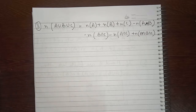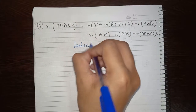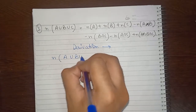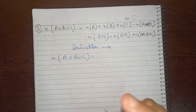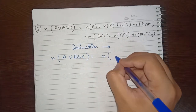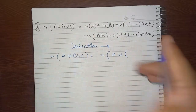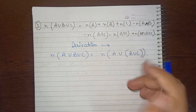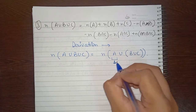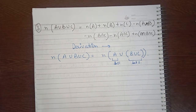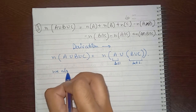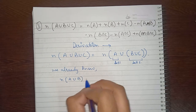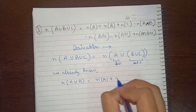This is our first equation, and from the earlier expansion we have our second equation. Combining equation one and equation two, we get what we want: the complete formula for A union B union C. The first part was: number of elements in A, plus number of elements in B, plus number of elements in C, minus number of elements in B intersection C.